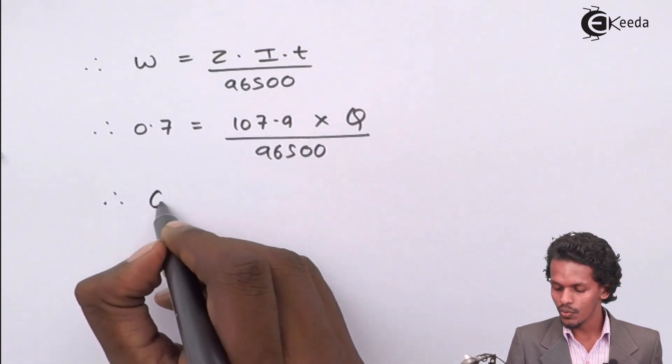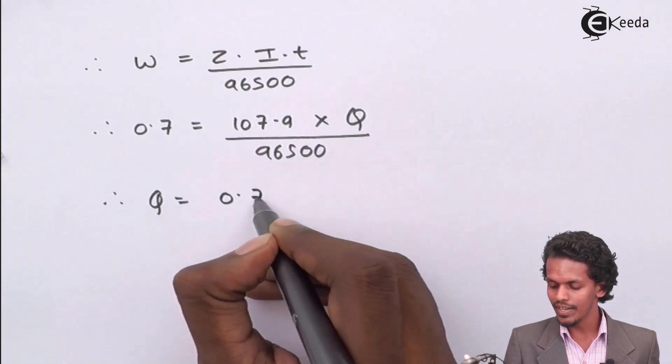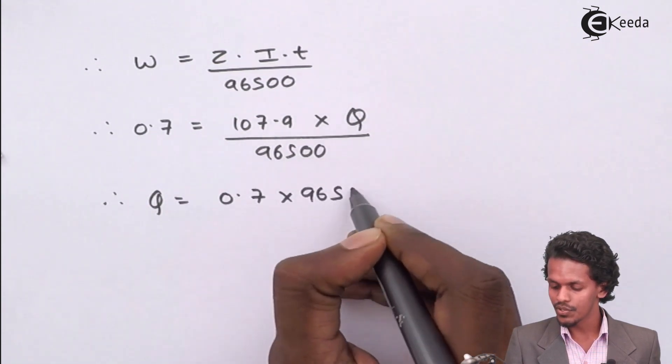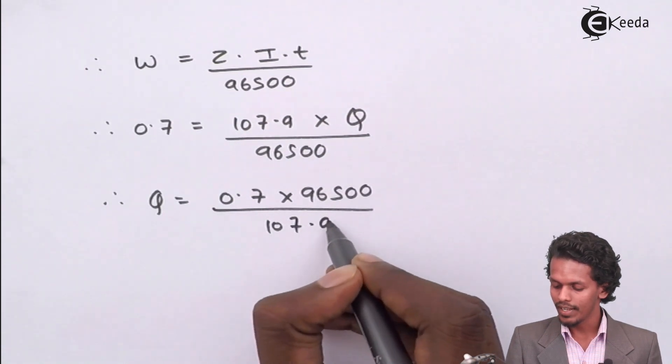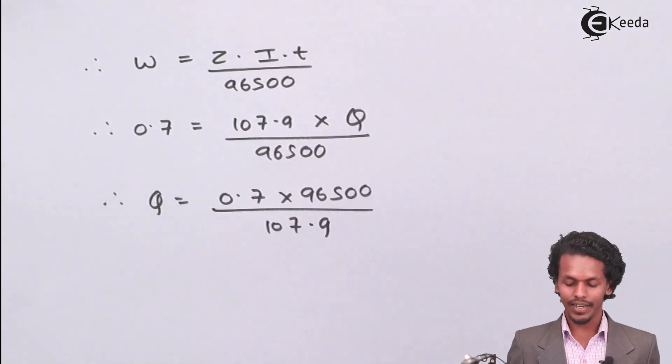Therefore, q = 0.7 × 96500 / 107.9. Let us see what is the answer that we will get.